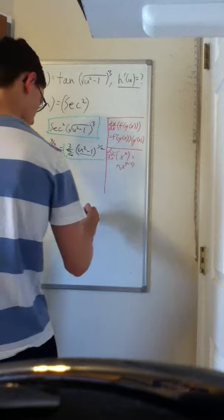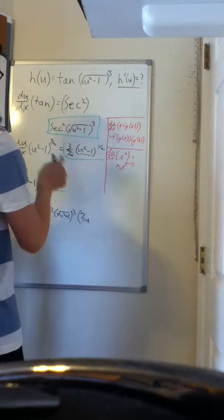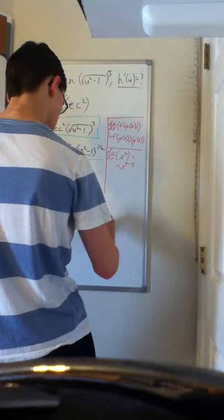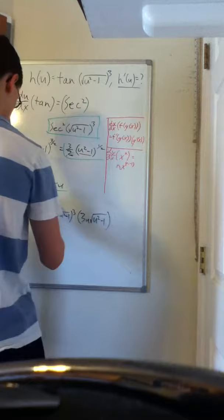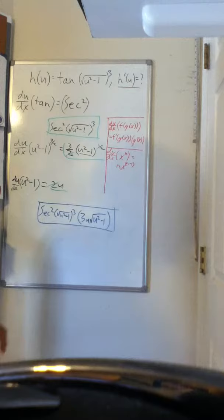And now since it's one half, we can go back to the square root. So three u times the square root of u squared minus one. And that is our final answer.